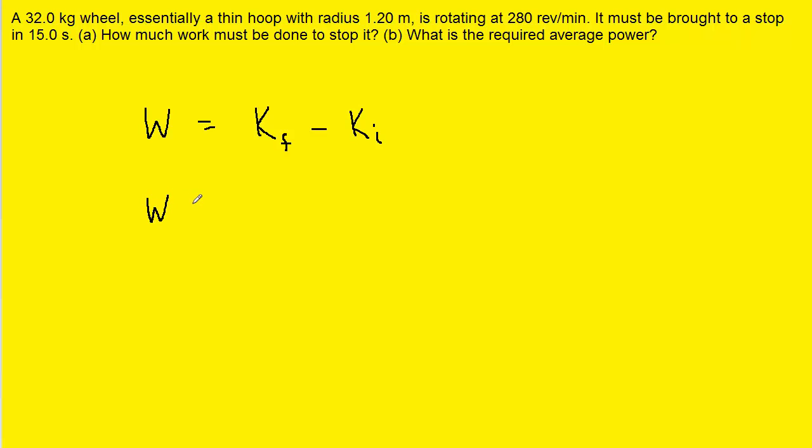Now this is a rotating body, so when we use the kinetic energy equations, we're not going to be using the typical one-half times mass times speed squared. What we're going to use is one-half times the rotational inertia times the angular speed squared. It's a very similar equation to the traditional kinetic energy formula, but because it's a rotating body, we have to modify it just a little bit.